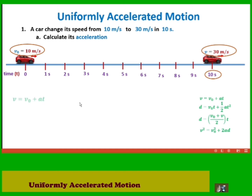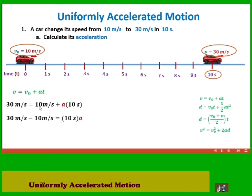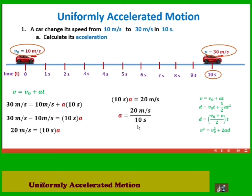Substituting into equation 1: final speed is 30 meters per second, initial speed is 10 meters per second, a is unknown, and t is 10 seconds. Simplify the equation — transfer 10 meters per second to the left side, it becomes negative. So 30 minus 10 is 20 meters per second. We interchange the left and right members of the equation and solve for a by dividing both sides by 10 seconds. The acceleration is 2 meters per second squared.